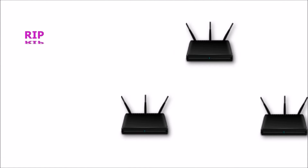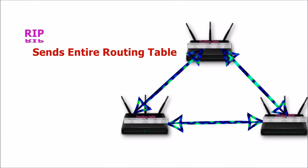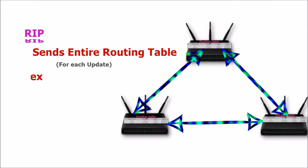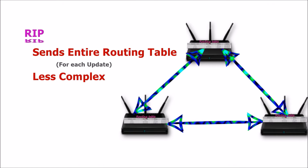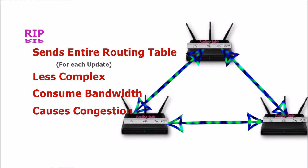Distance vector routing protocols like RIP require routers to transmit their entire routing tables for each update. This reduces the overall complexity of the protocol, but at the same time places a burden on the network infrastructure by consuming bandwidth, which in turn can congest the network.